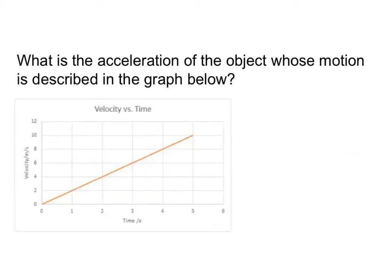We're going to get started by jumping right into things. We want to figure out the acceleration of the object whose motion is described in the graph below. The first thing you want to do when you look at any graph is figure out what kind of graph it is. I can see that I've got time on my x-axis and velocity on my y-axis, and the title of my graph is velocity versus time — so this is a velocity-time graph.